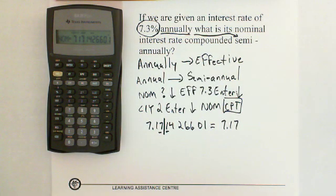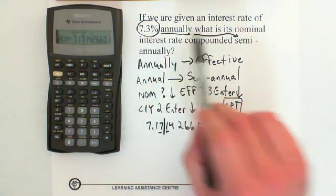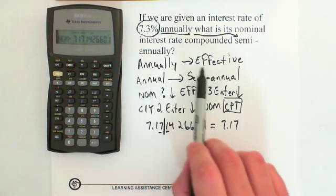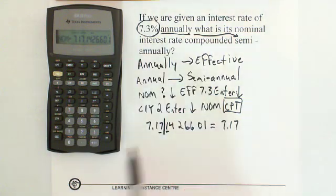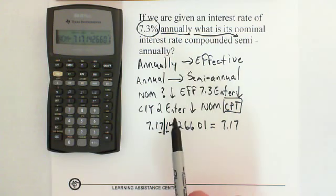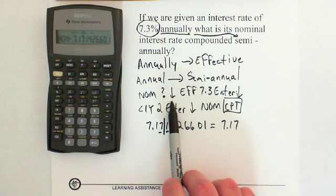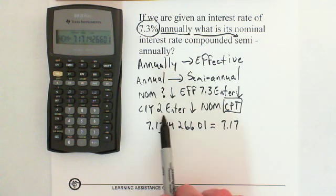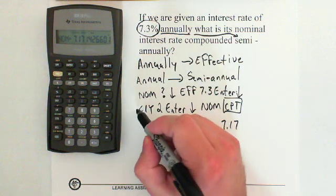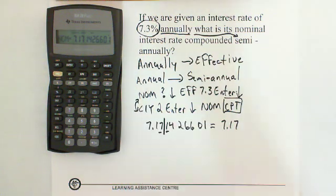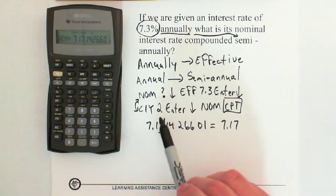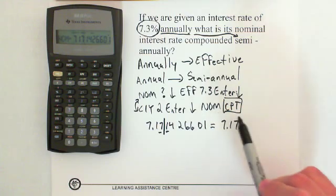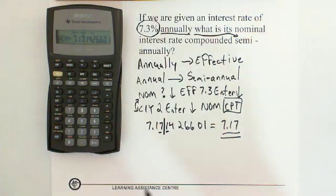In this question we were given 7.3 annual and we wanted to convert it to a semi-annual rate — or effective to nominal, because annual is effective. In our interest conversion, we skip NOM and go to EFF, type in 7.3, go down to CY — and CY always refers to the nominal, so nominal and CY always go together. We change CY to 2 because it's a semi-annual rate, go back to NOM and push Compute, ending up with 7.17.